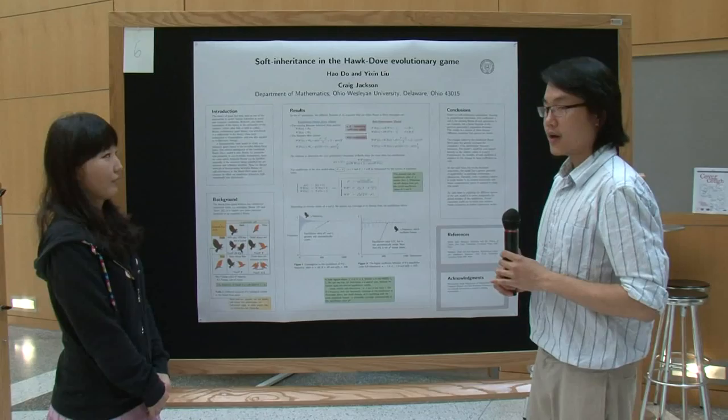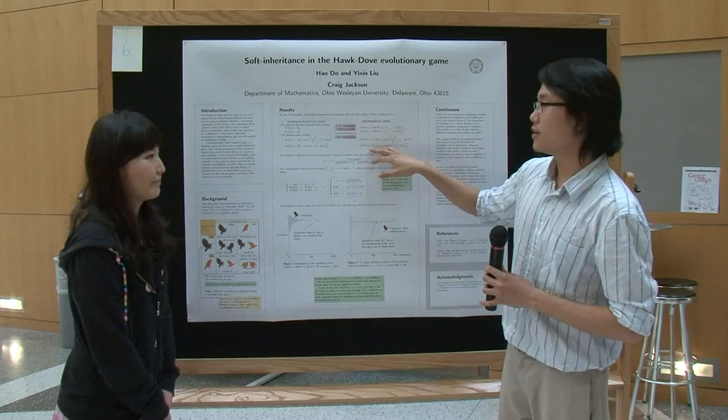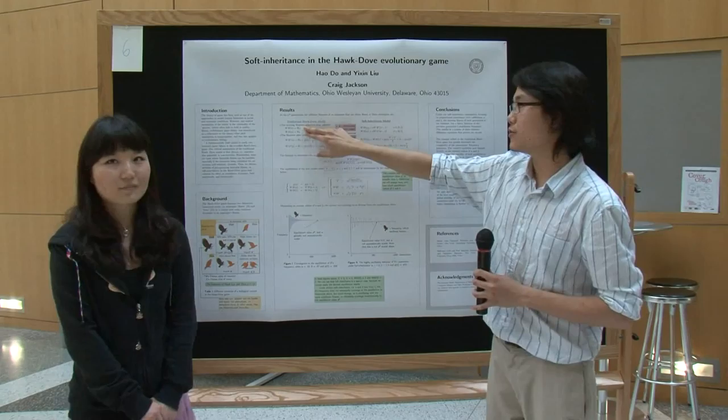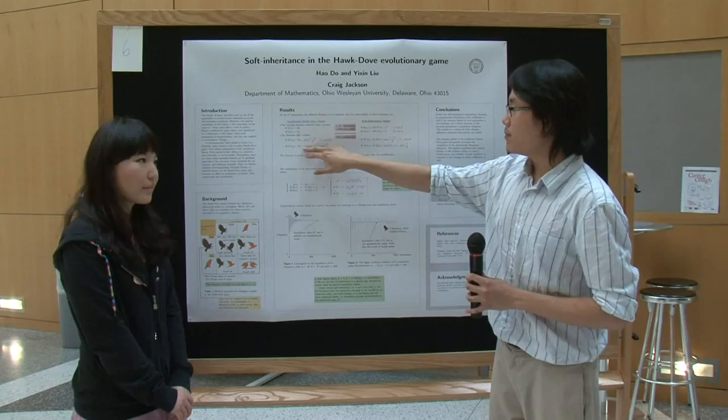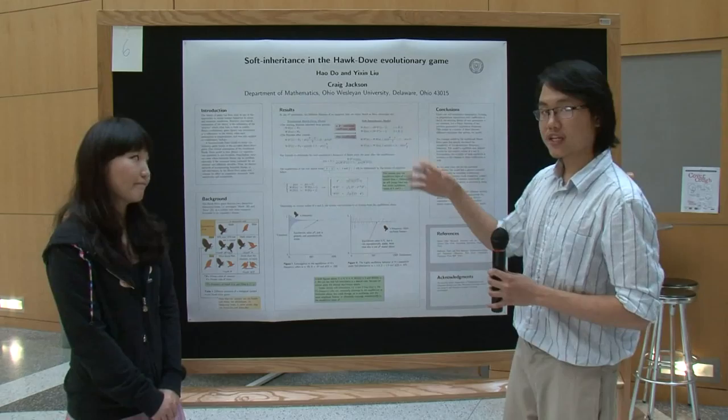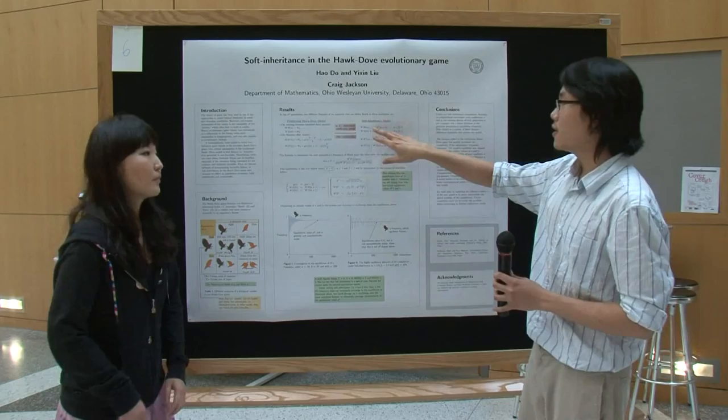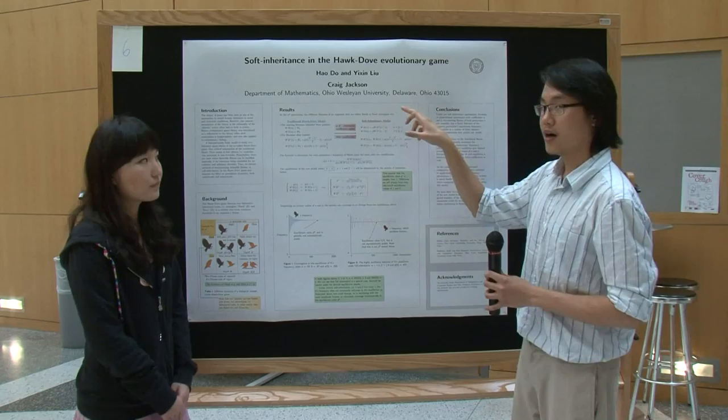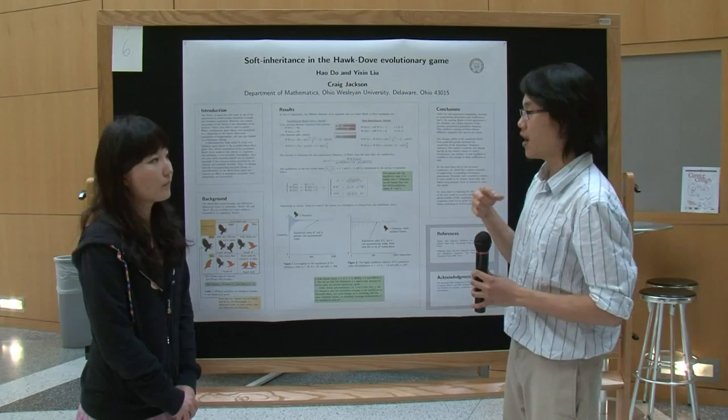I'm going to talk about how we modify the model and our results. In the old model, the fitnesses of hawk and dove start as W0, which is the same after every single generation. To make fitness heritable, the fitness of the next generation needs to be a function of the fitness of the previous generation. So we changed the fitness of hawk and dove to become a function of the previous one — alpha times the previous hawk and dove fitness.